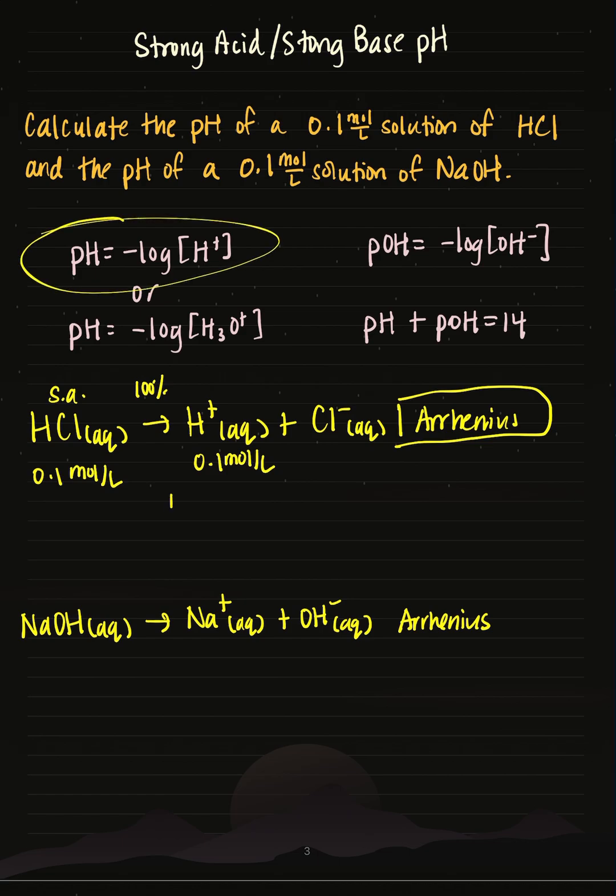Here's my pH formula. pH equals the negative log of H plus, which is my concentration of hydrogen ions. So that will be the negative log of 0.1 moles per liter, which gives me 1. So the pH of this solution of HCl is 1.